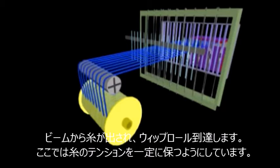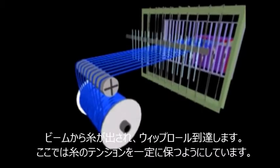After the yarns leave the loom, they go over a whip roll that is part of the warp yarn tensioning system.